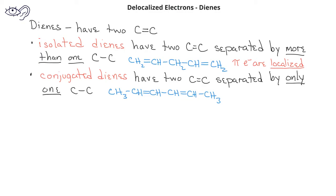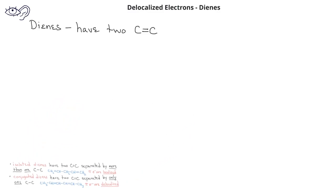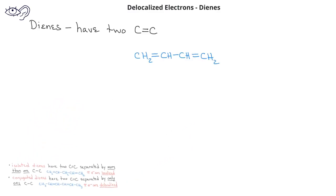However, the pi electrons in conjugated dienes are delocalized, so conjugated dienes will be more stable. In this conjugated diene, we could move the pi electrons to the left, which results in a negative charge on the first carbon from the left and a positive charge on the carbon all the way to the right. There is now a pi bond in between the second and third carbons.